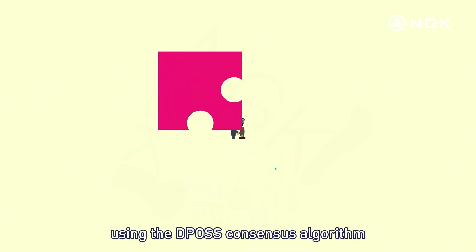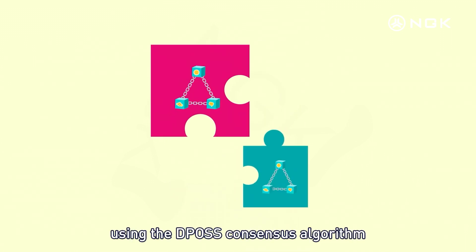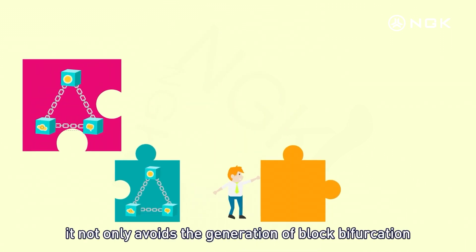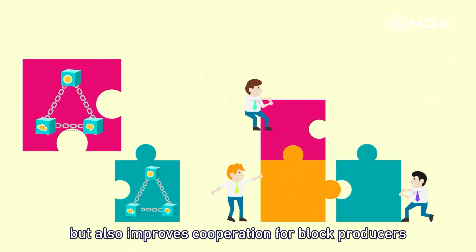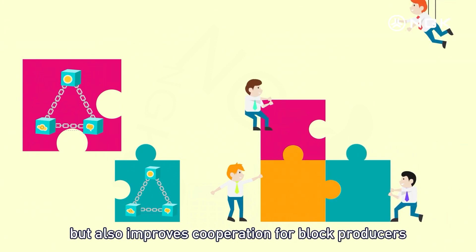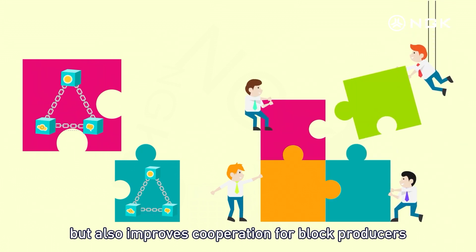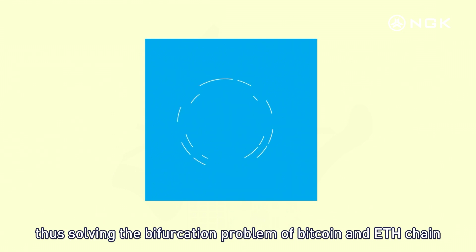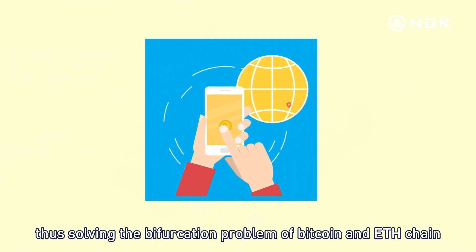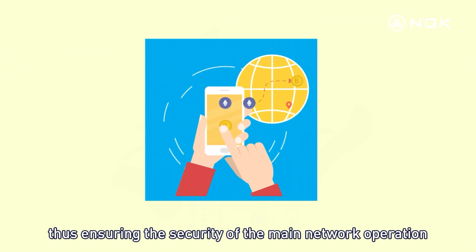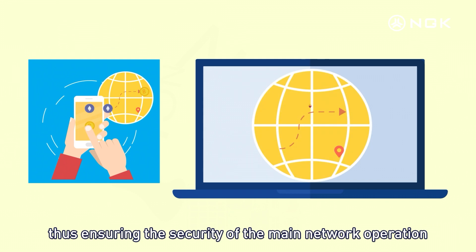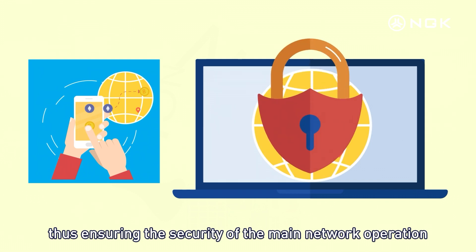Using the DPoS consensus algorithm, it not only avoids the generation of block bifurcation, but also improves cooperation for block producers, thus solving the bifurcation problem of Bitcoin and ETH chain, and ensuring the security of the main network operation.